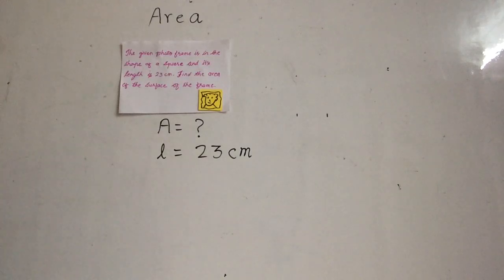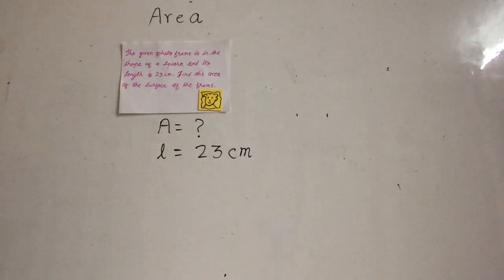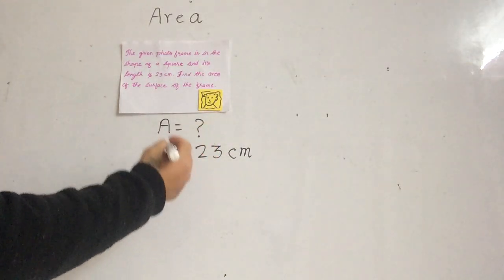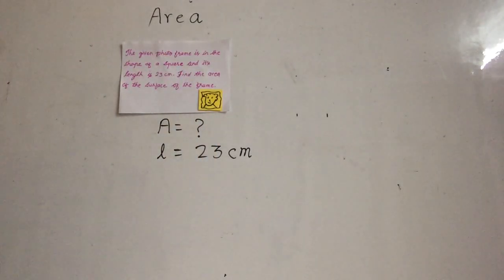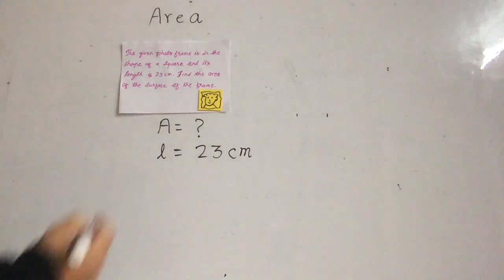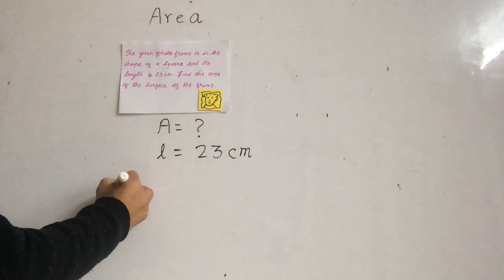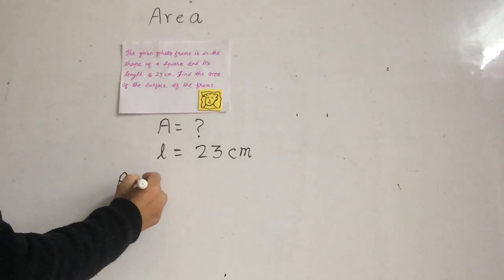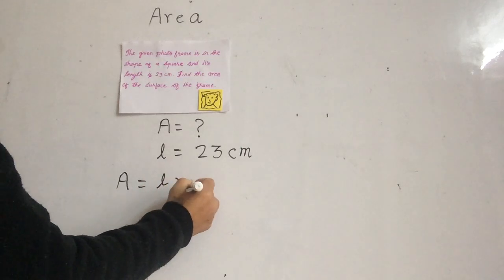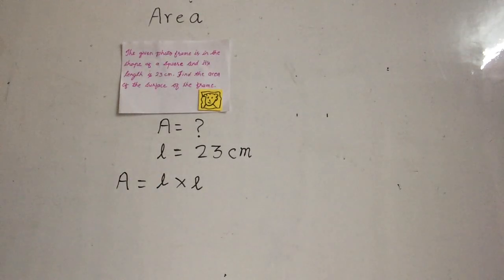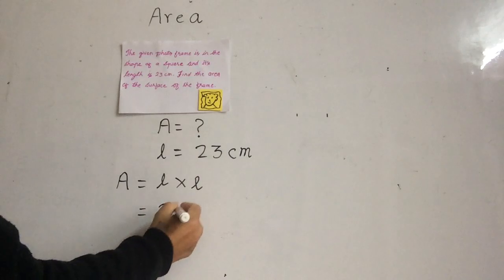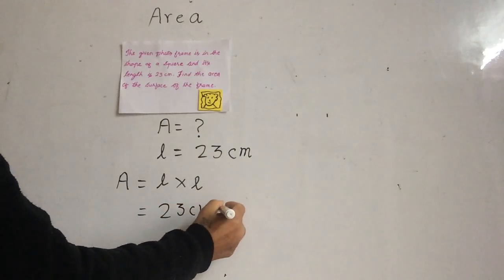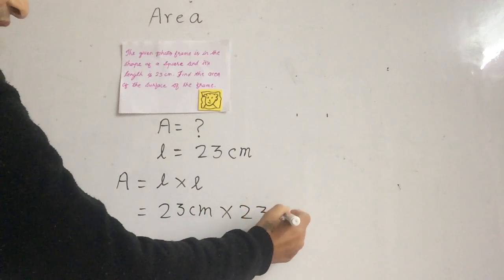Now, as we discussed, to find the area we multiply length into breadth. But since this is a square shape, all sides are equal — that is why we have the formula: area equals length times length. So the length is 23 cm times 23 cm.